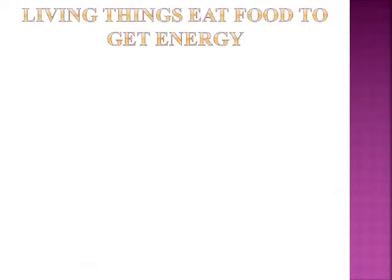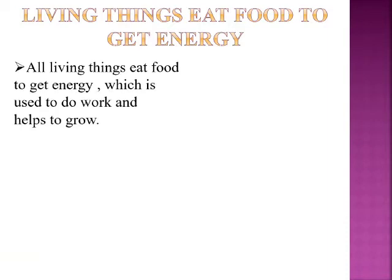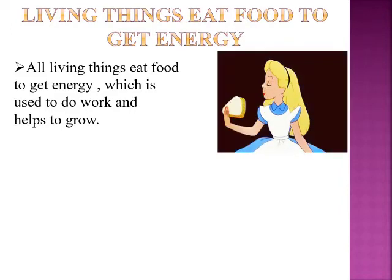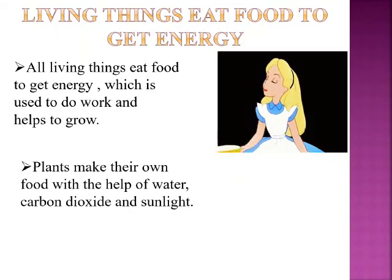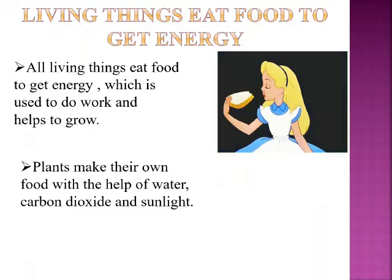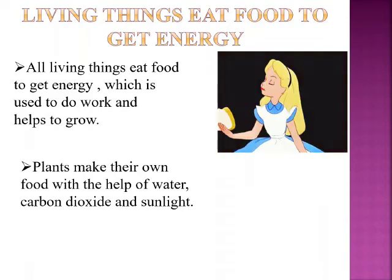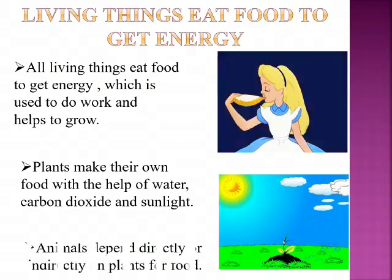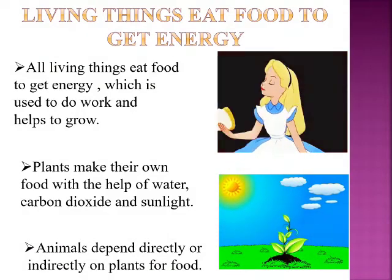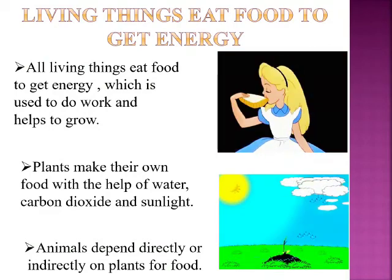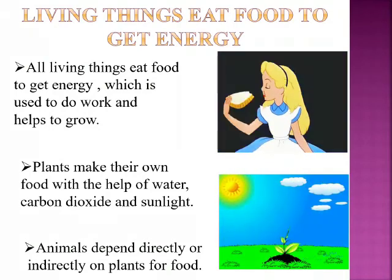The next feature is living things eat food to get energy. All living things eat food to get energy, which is used to do work and helps to grow. Plants make their own food with the help of water, carbon dioxide and sunlight. Animals depend directly or indirectly on plants for food. Thus, food is the main source of energy given to us.